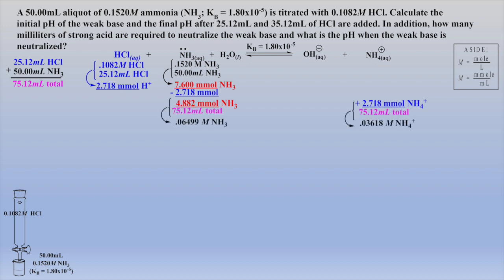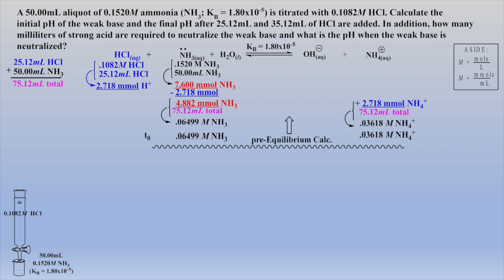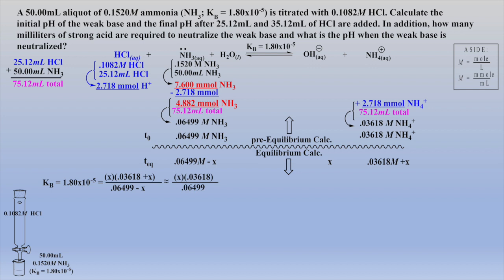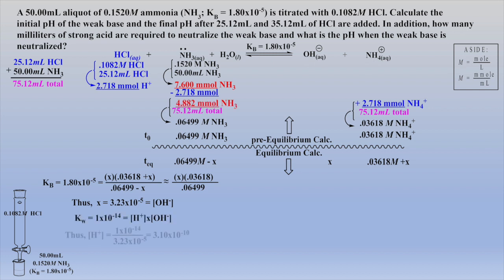These are now easily converted back to molarity. At this point, our pre-equilibrium calculations are complete and we are ready to look at our equilibrium concentrations after indicating expected change. Our expected equilibrium concentrations are placed into the expression for Kb. The denominator and numerator are simplified due to the 5% rule. The concentration of hydroxide is calculated, followed by the two steps shown previously to afford the final pH.